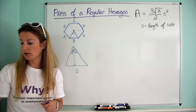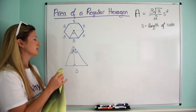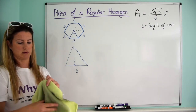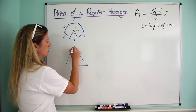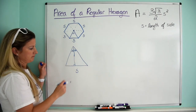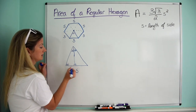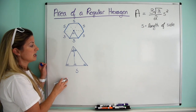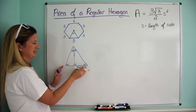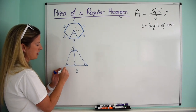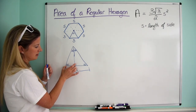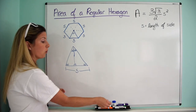Now I'm going to drop an altitude. When I drop the altitude it bisects the 60-degree angle, giving me 30 and 30. This creates a right angle of 90 degrees at the base, so the remaining angles are 60 and 60 — this is an equilateral triangle. Dropping the altitude also bisects the base, so each half is one half s.